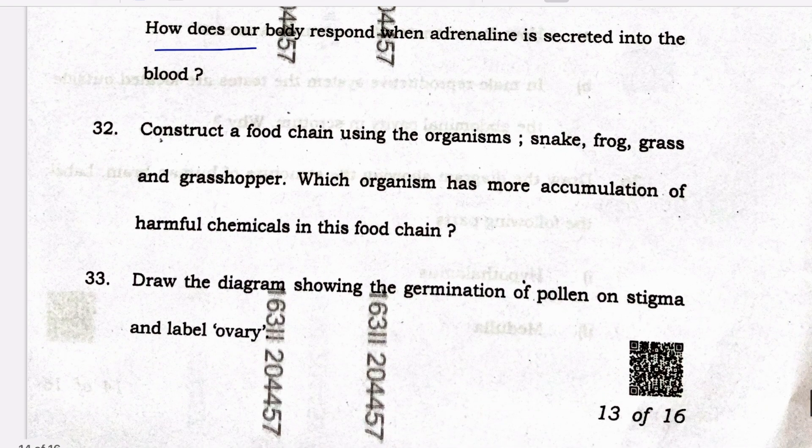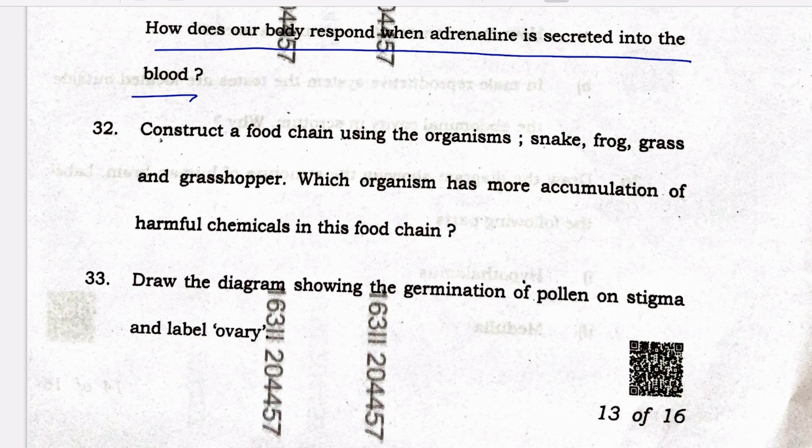Optional question: how does our body respond when adrenaline is secreted into the blood? When adrenaline is secreted into the blood, our body enters a fight-or-flight response to deal with stress or danger. It causes an increase in heart rate, dilated pupils, rapid breathing, increased blood flow to muscles, and reduced digestion and other non-essential functions.